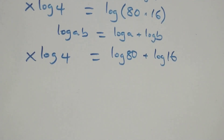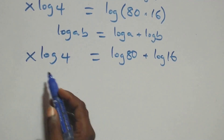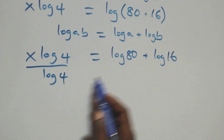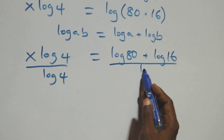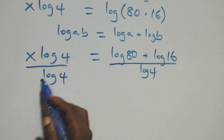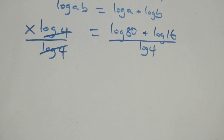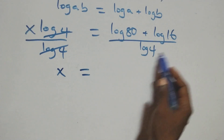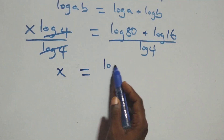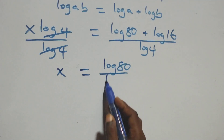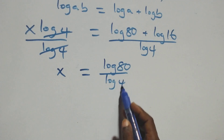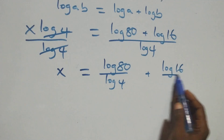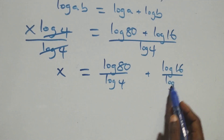Then we divide both sides by log 4. Log 4 cancels on the left, and we have x equals log 80 over log 4 plus log 16 over log 4, separating this into two fractions.